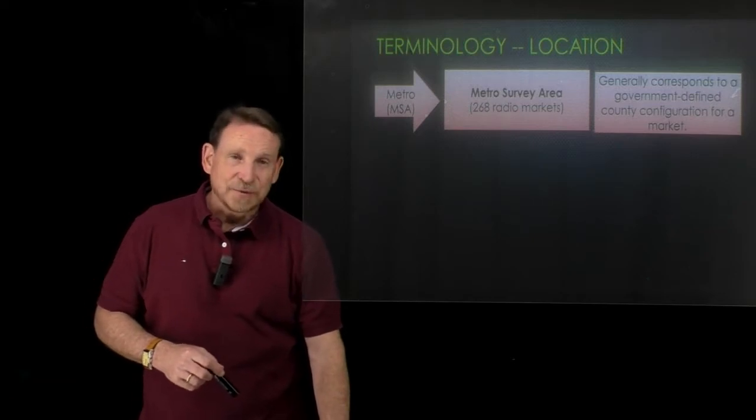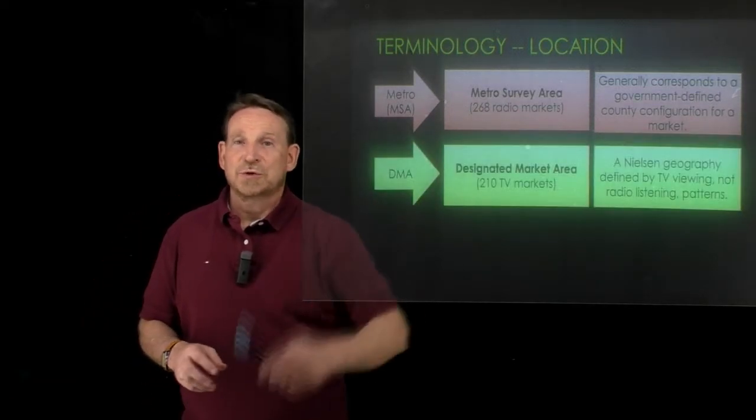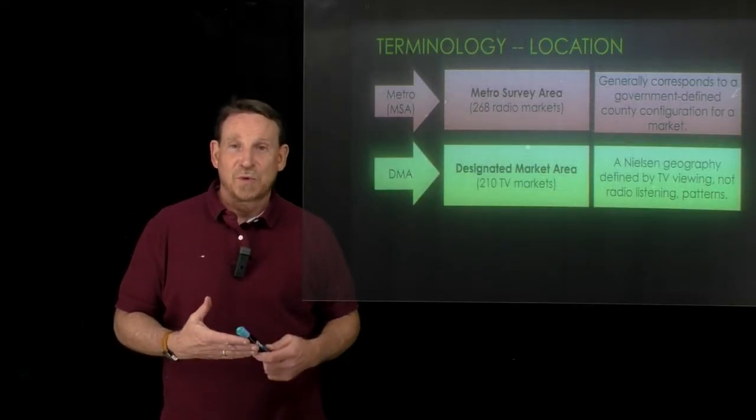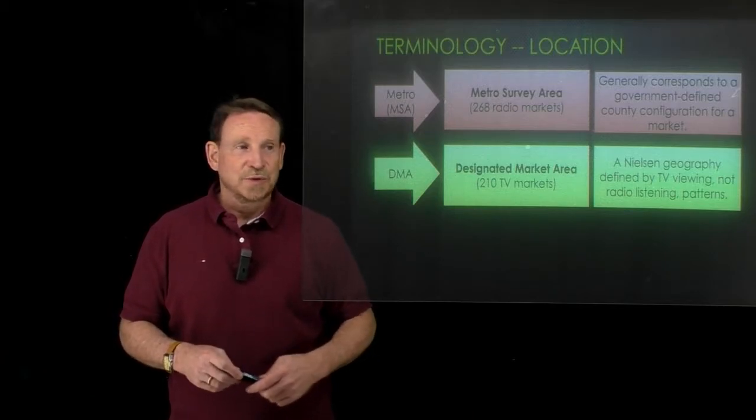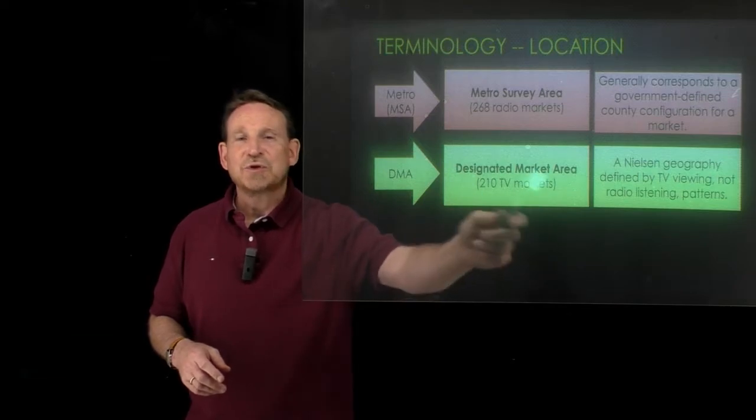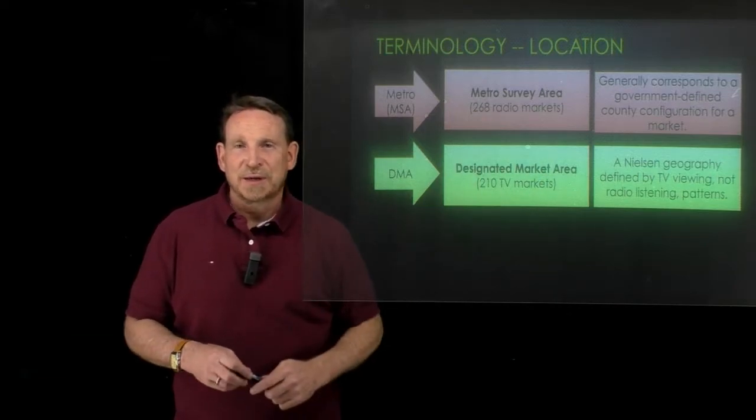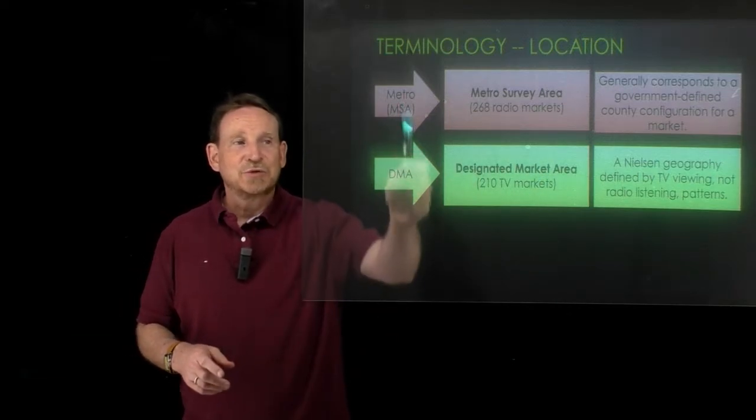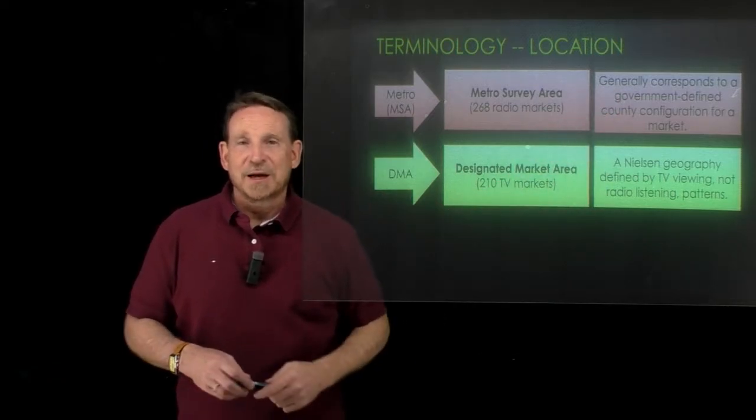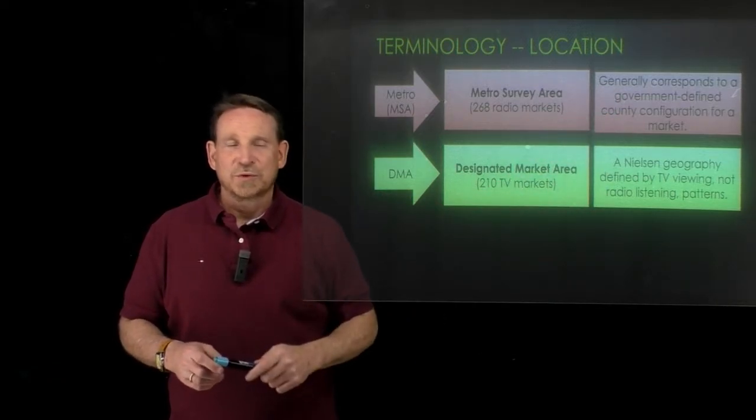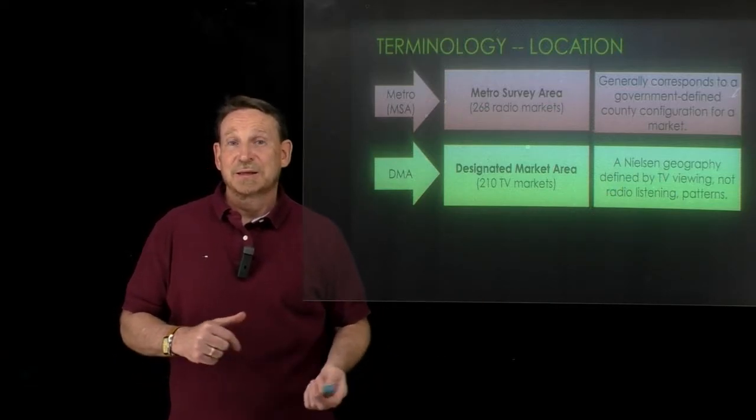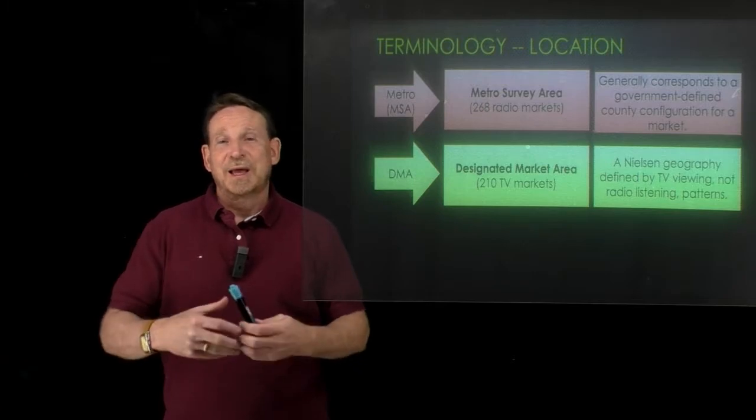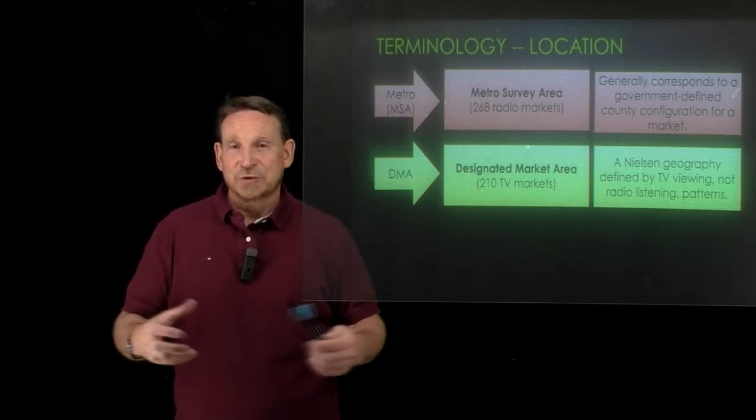Let's look at television. You did a little research earlier about the DMA for Orlando, and you found out that we are 18 in the country. That's right. So we're 18 out of 210 designated market areas. Unlike the metro, these are not defined specifically by government designations and borders. These instead are defined by Nielsen taking into consideration the population and the broadcast and cable reach.